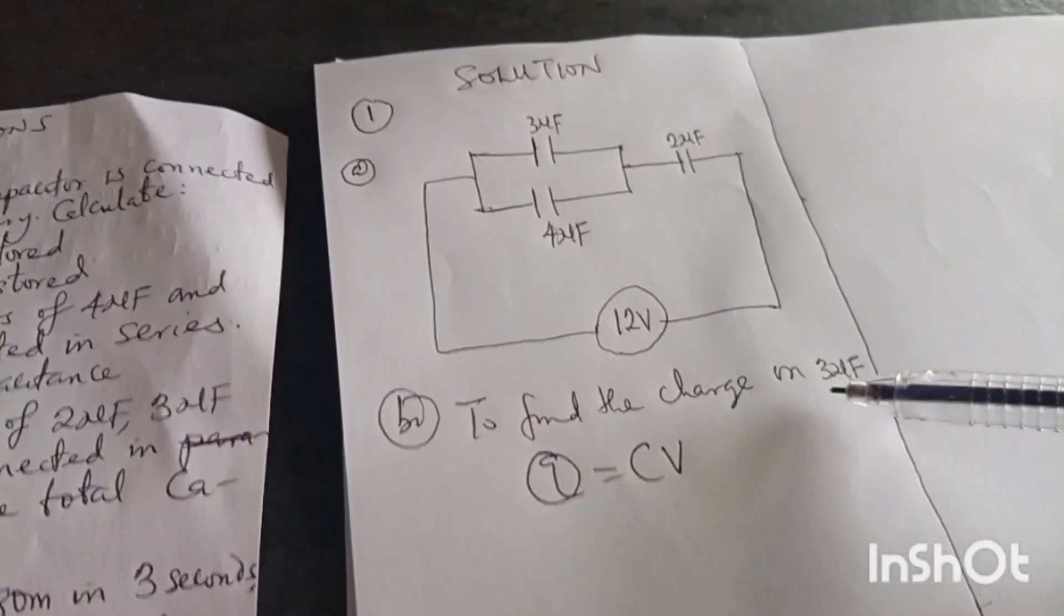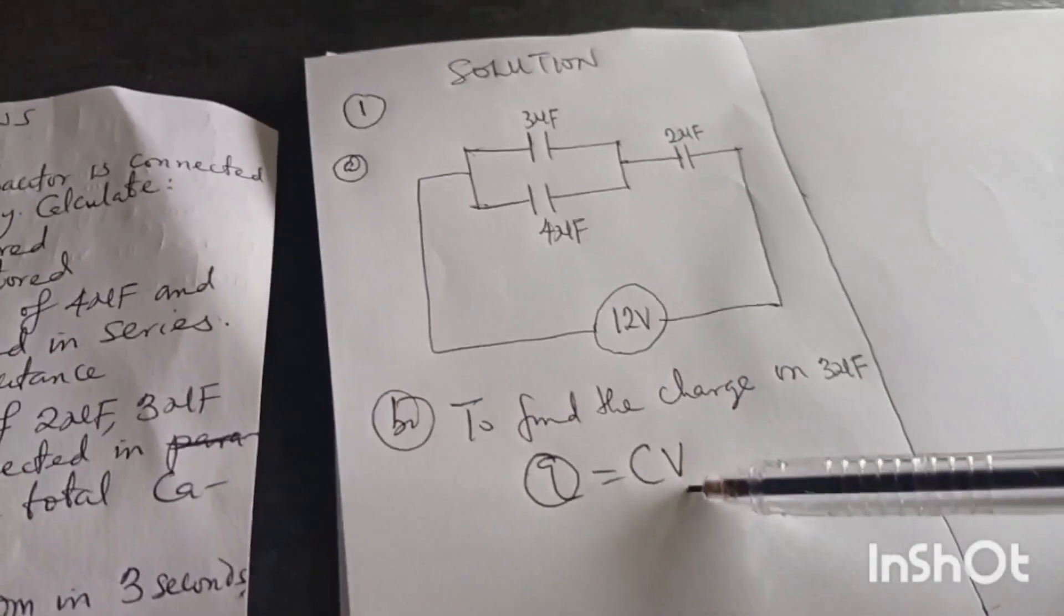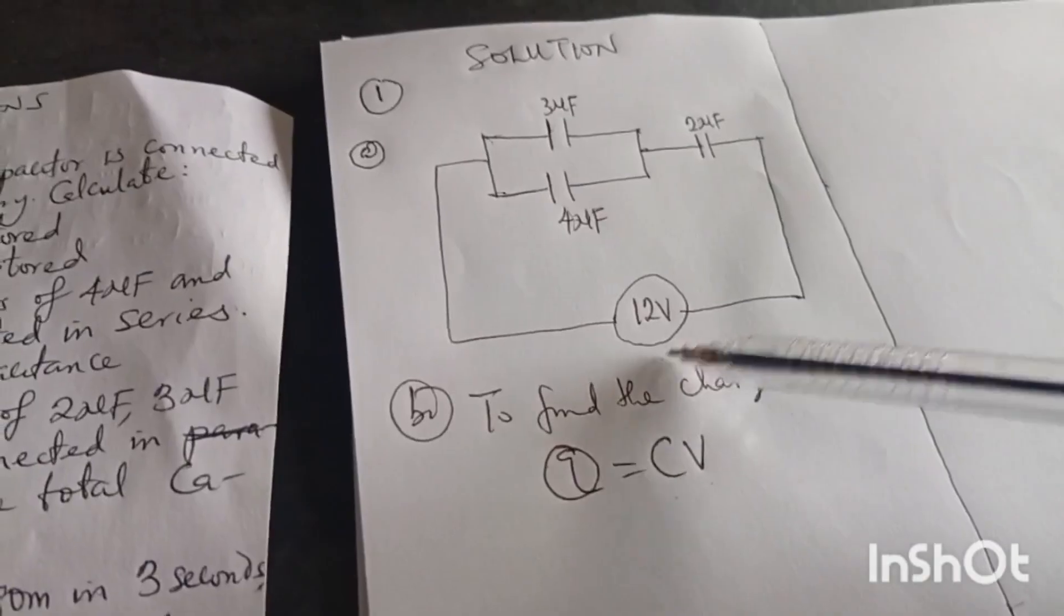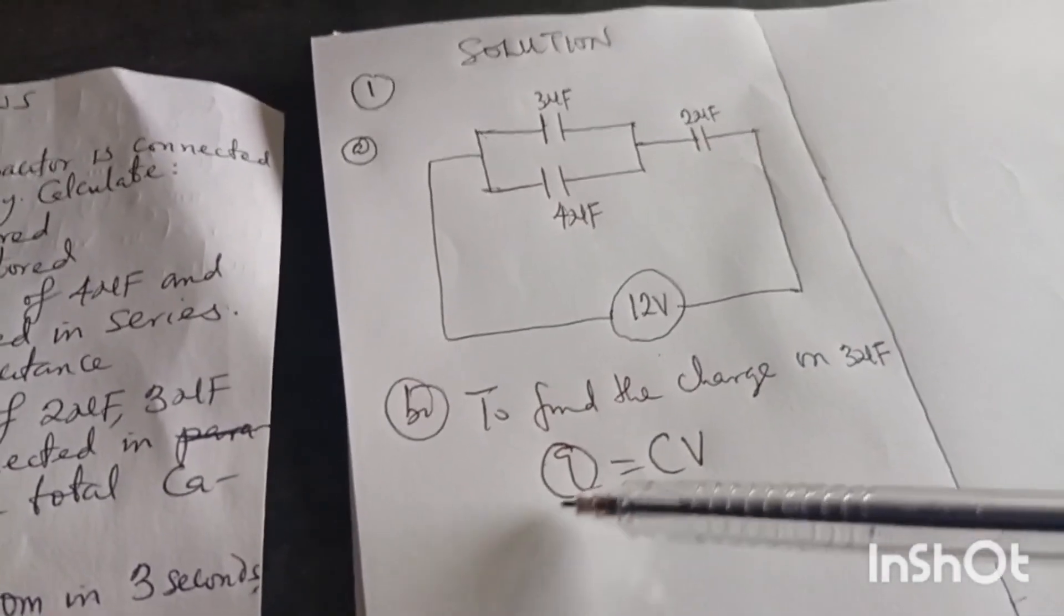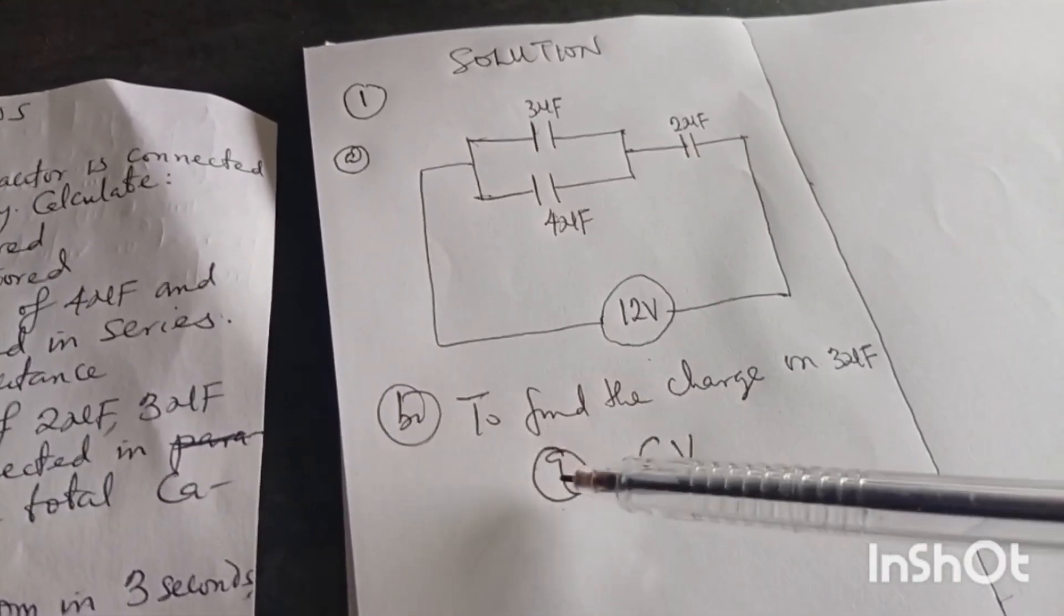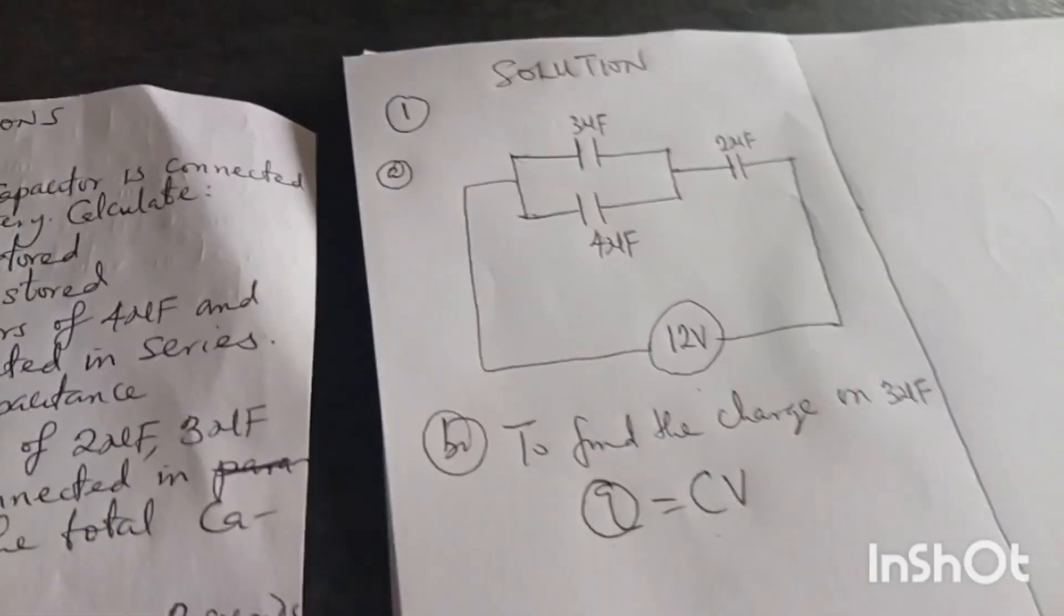Now to find these things, all of us we know that whenever we talk about charge and capacitor, the formula that relates charge and capacitor is Q equals to CV. At this moment we can see that our C is 3 microfarad. Unfortunately, we don't have voltage because this voltage we are seeing is voltage of the whole circuit.